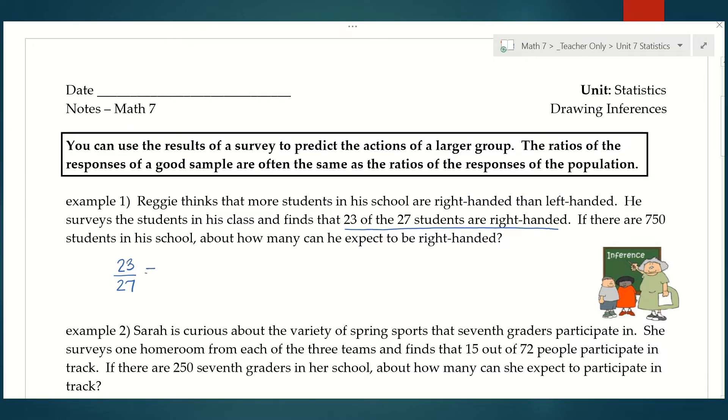What I want to do is I want to figure out out of the 750 students in the school, so 750 being my whole again, what part of that amount would I expect to be right-handed? So my proportion is right-handed people out of the total equals right-handed people out of the total. The left side is your sample and the right side is the population.